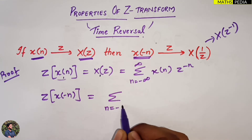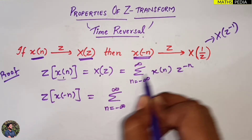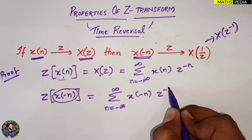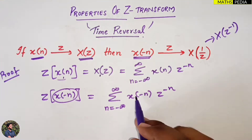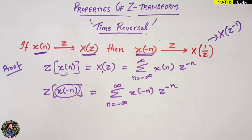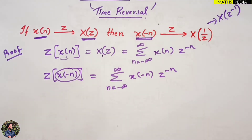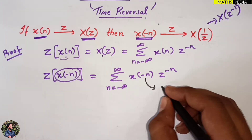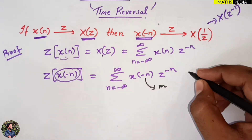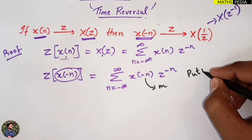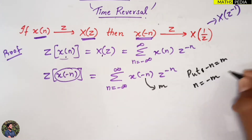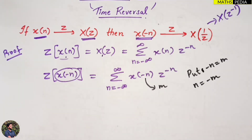The Z-transform of x(-n) will be equal to: summation from n = -∞ to ∞ of x(-n) · z⁻ⁿ — rest all remains the same. Now we have to do a substitution. In place of -n, I will substitute another variable m. So putting -n = m, then n = -m.